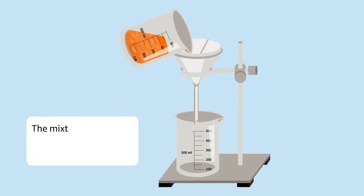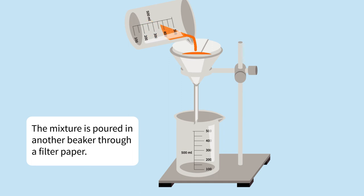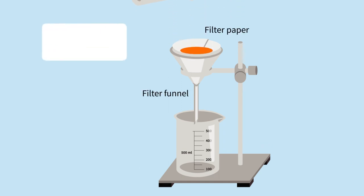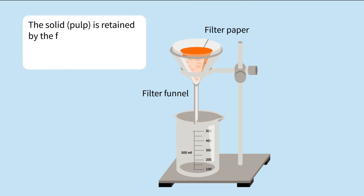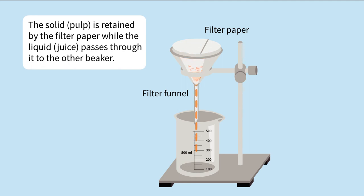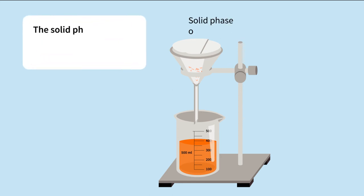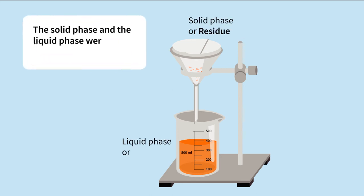Filtration — separating orange juice from its pulp: the mixture is poured into another beaker through a filter paper. The solid pulp is retained by the filter paper while the liquid juice passes through it. The solid phase and the liquid phase are thus separated by filtration.